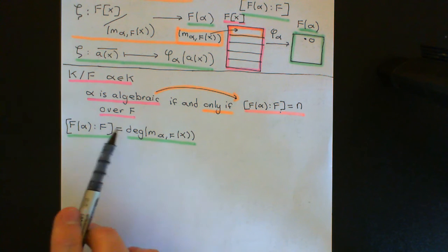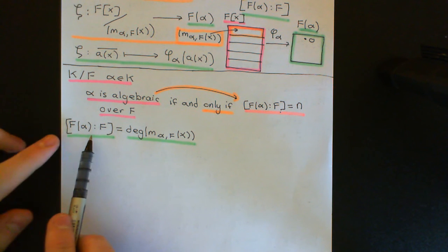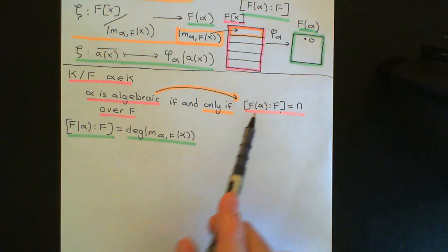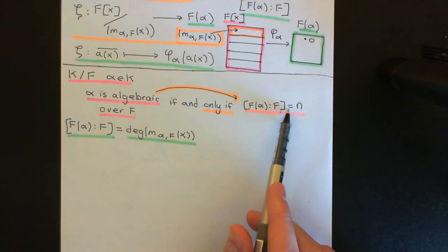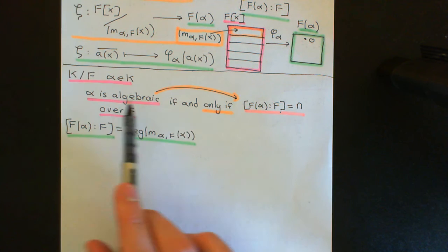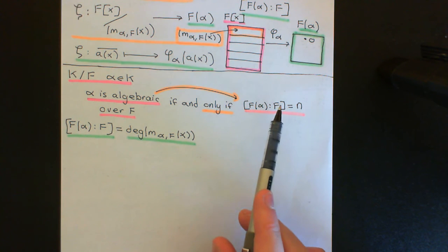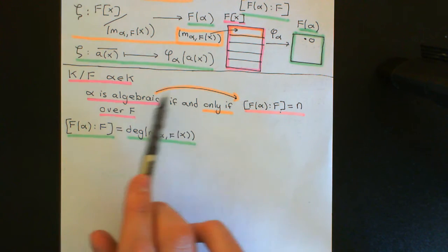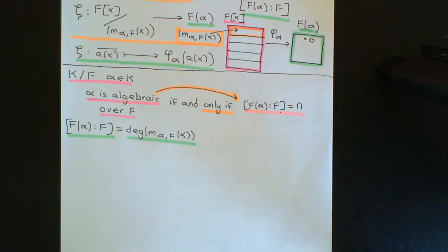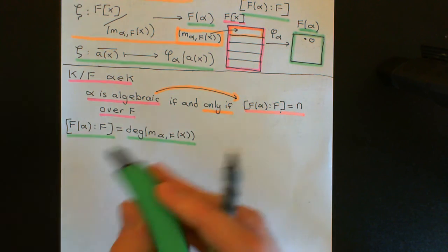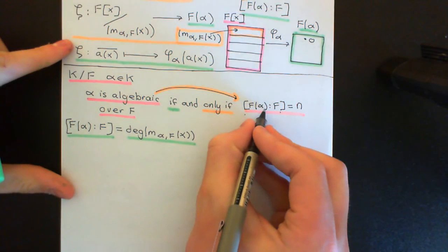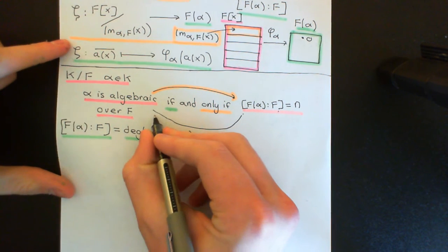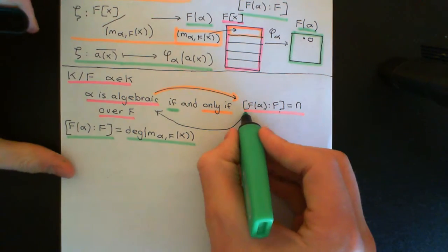This is certainly going to be finite — it's just some polynomial in the ring of polynomials over the field F, so it will have some finite natural number as its degree. Therefore this is finite, so we've shown that if alpha is algebraic, then the degree is finite. Now let's do the if portion — showing that if the degree is finite, it implies alpha is algebraic.